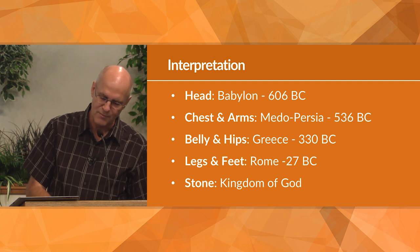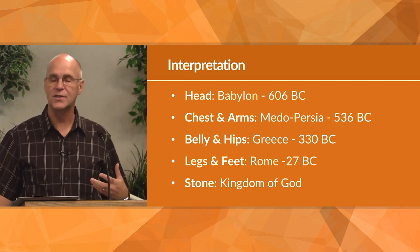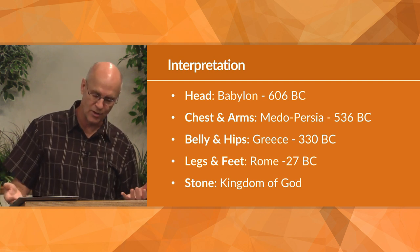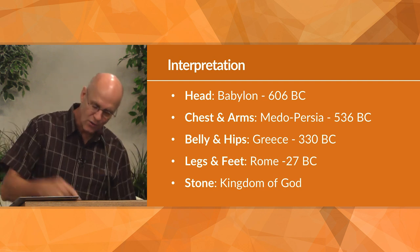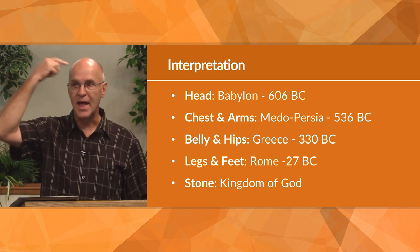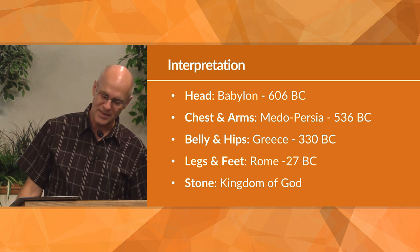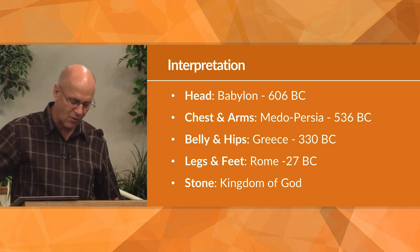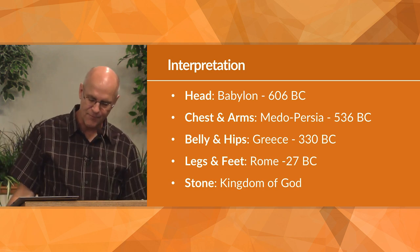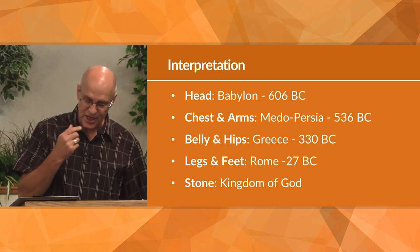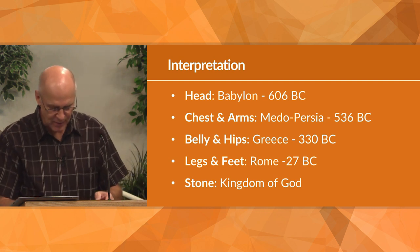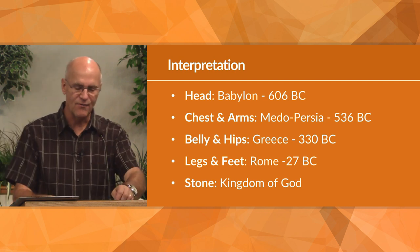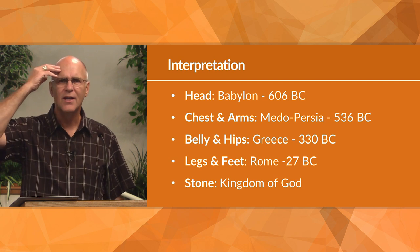The stone cut without hands — appearing supernaturally, not of this world — totally destroys the statue. Notice it doesn't hit the head or chest; it hits at the feet. The small stone shatters all the power, control, dominance, and glory. In the dream's interpretation, Daniel says the stone is a kingdom established by God, never to be destroyed, always alive and growing, and eventually dominating everything and everyone, lasting forever — kind of sounds like the church.